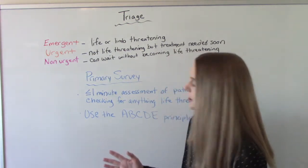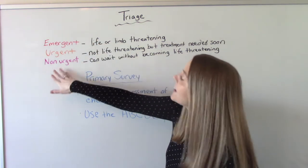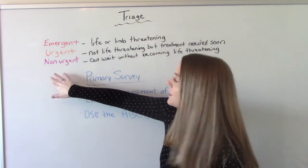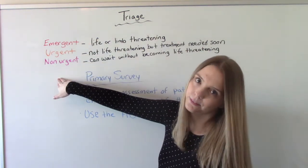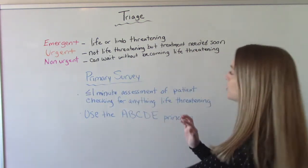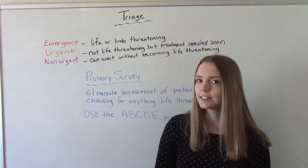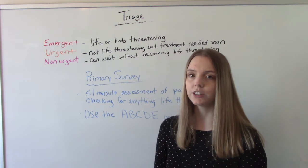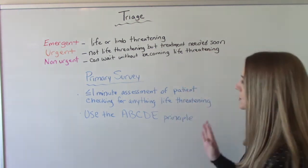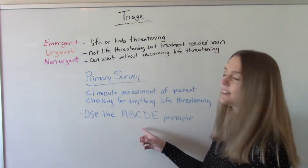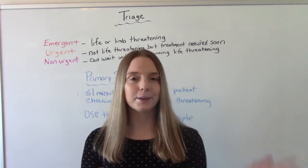These levels are normally represented by color: emergent is red, urgent is orange, and non-urgent is normally yellow. So how are we going to assess triage? We're going to do something called the primary survey, which is a 60-second or less head-to-toe assessment you're going to do on your patient, checking for any obvious things that are life or limb threatening. The best way to do this is to use the ABCDE principle.